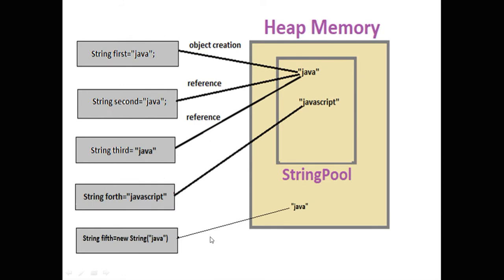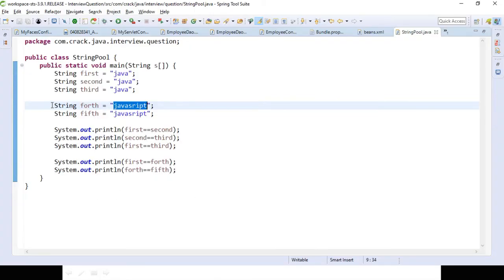There is one more way we generally create strings — using the new keyword with the string parameterized constructor. If we create a string this way, as per the diagram the value will not be stored into the string pool. String pool is only used for string literals. So even if the fifth object has the same value 'Java' as the first, second, and third objects, a new object will be created and it will be somewhere in heap memory.